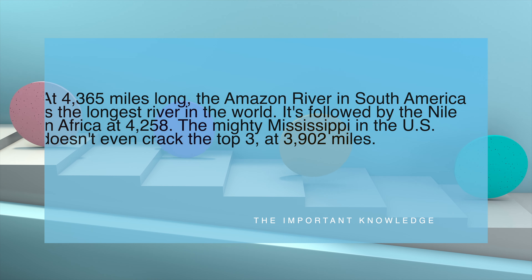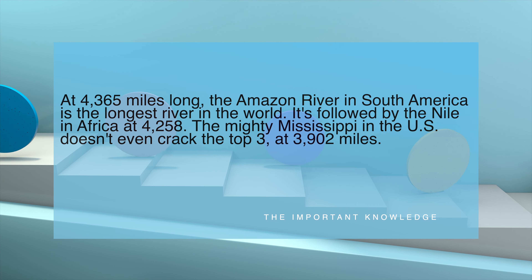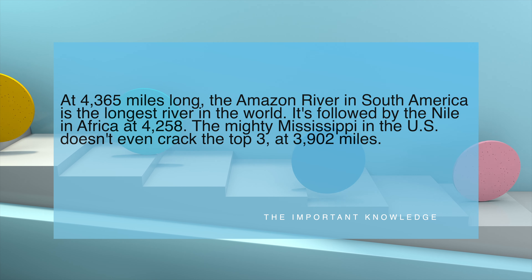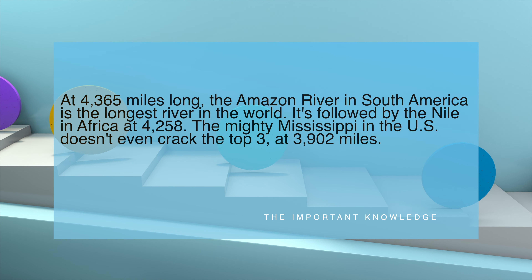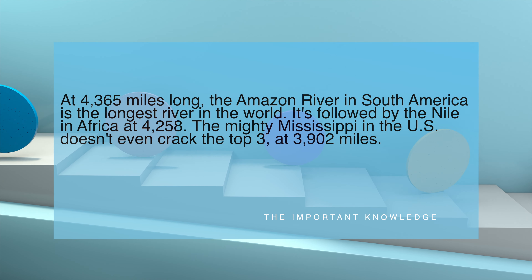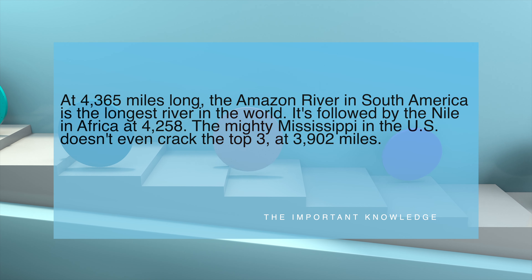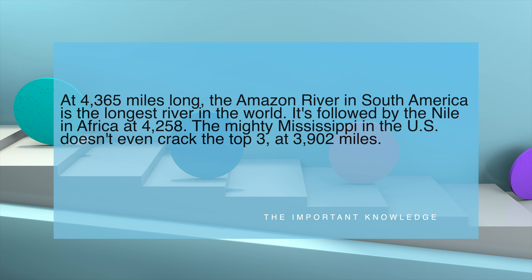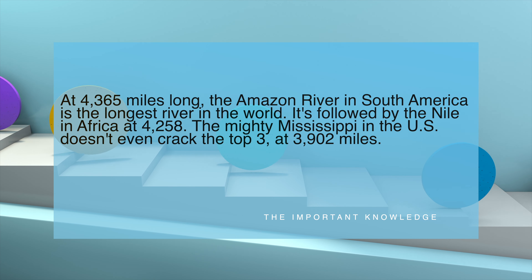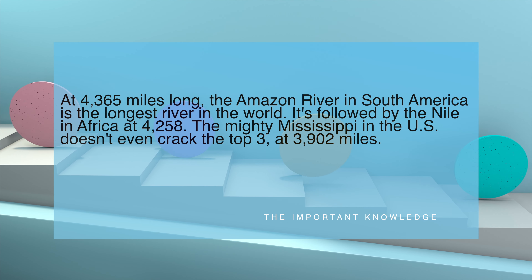At 4,365 miles long, the Amazon River in South America is the longest river in the world. It's followed by the Nile in Africa at 4,258 miles. The mighty Mississippi in the U.S. doesn't even crack the top three at 3,902 miles.